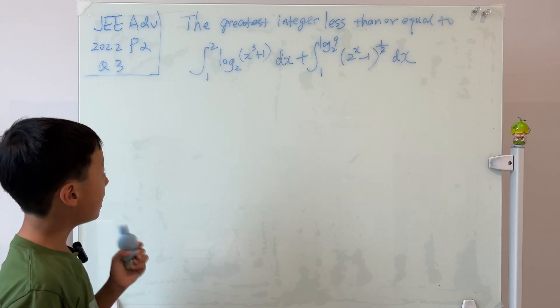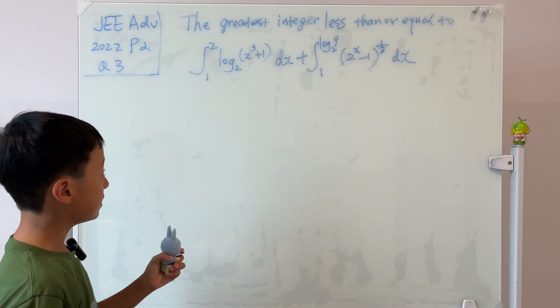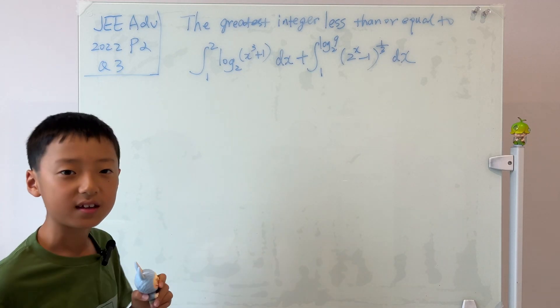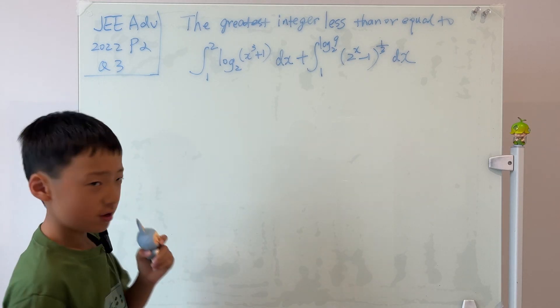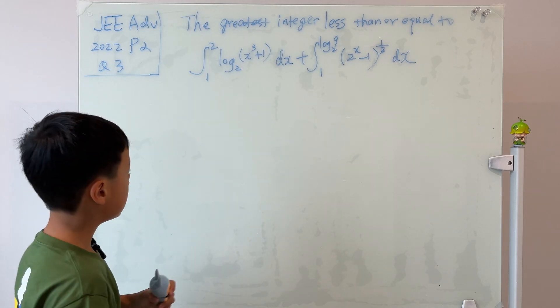It asks us the greatest integer less than or equal to this big thing. This looks scary, right? But don't be scared about this.